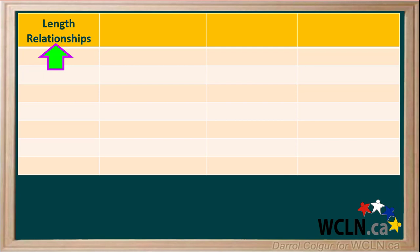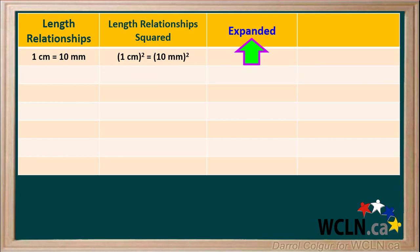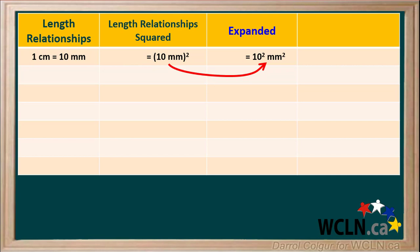In this table, we'll look at a few relationships between lengths in various units. For example, we know that one centimeter is equal to ten millimeters — this works well for length. Next, we'll square this relationship, which means we square both sides of the equation. One centimeter all squared is equal to ten millimeters all squared. In the third column, we'll expand this equation so both the numbers and the units are squared separately.